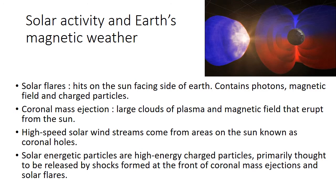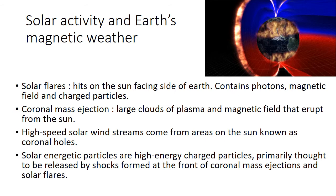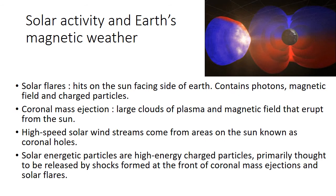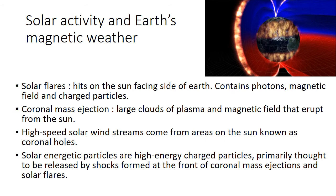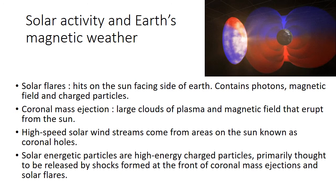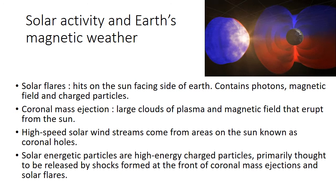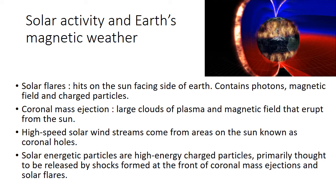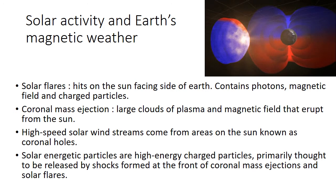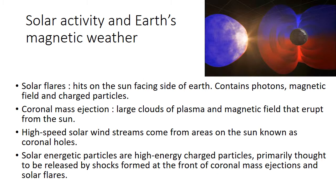Solar activity affects the Earth's magnetic weather a lot, because solar activity contains the release of many charged particles — plasma contained in the outer sphere of the sun — which directly affects the magnetic weather of the Earth. There are mainly four types of phenomena which affect the Earth's magnetic weather: solar flares, coronal mass ejection, high-speed solar winds, and solar energetic particles. The solar flares hit only the sun-facing surface of the Earth. They contain photons, magnetic field, as well as charged particles — and since they contain photons, we can see solar flares.